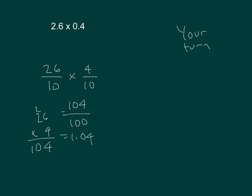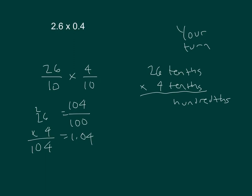Within unit form, 26 tenths times 4 tenths. My answer is going to be in hundredths. 4 times 6 is 24, regroup the 2. 4 times 2 is 8, plus 2 is 10. That's 104 hundredths, which equals 1.04. That's my answer.